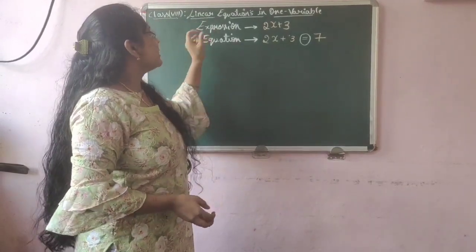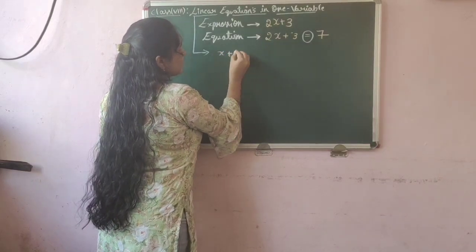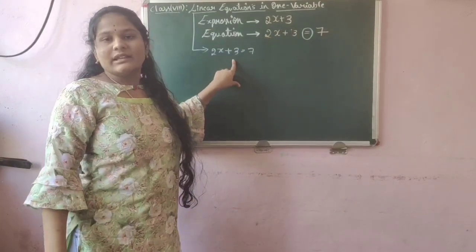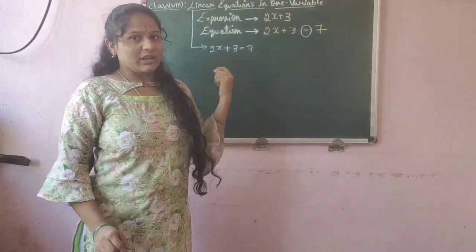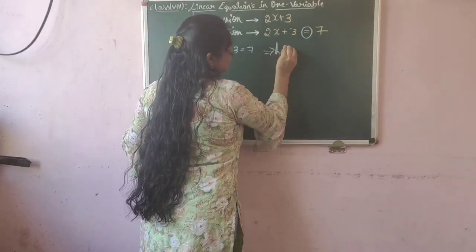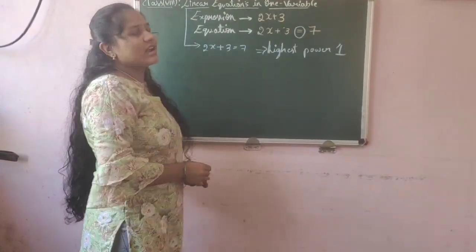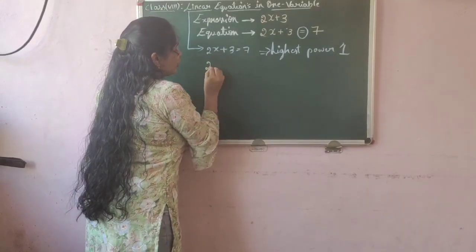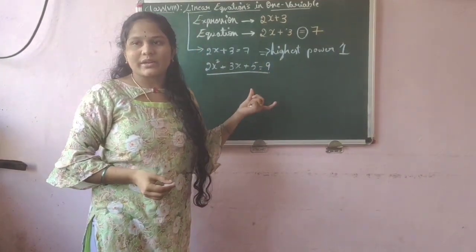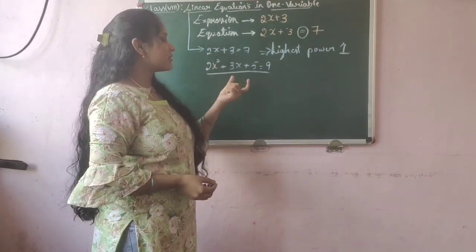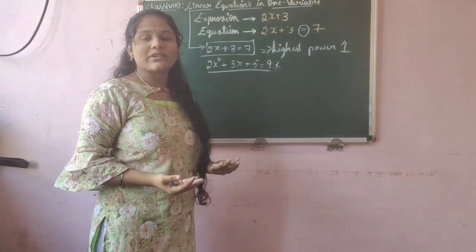Now, what do we mean by a linear equation? A linear equation is nothing but 2x plus 3 is equal to 7, where the highest power of the variable should be 1. For a linear equation, the highest power should be 1. On the other hand, if we have 2x squared plus 3x plus 5 equal to 9, this is not a linear equation — it is a quadratic equation since the highest power of the variable is 2. We get linear equations only for variables with the highest power of 1.